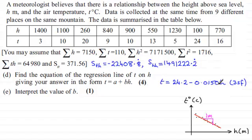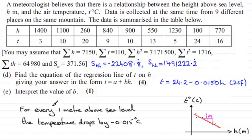So interpreting this for our table, essentially for every one meter above sea level the temperature drops by 0.015 degrees C. This value is a drop of 0.015 degrees C.